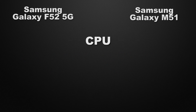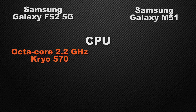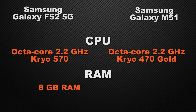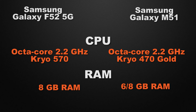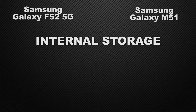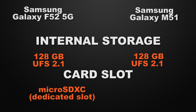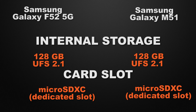Both devices can clock at 2.2 GHz on an octa-core Kryo chipset, so it's a tie. The F52 has only an 8GB RAM variant, whereas the M51 has two variants — 6GB and 8GB — so the winner is M51 for having multiple RAM options. Both devices come with 128GB internal storage and a dedicated microSD card slot, so it's a tie on both counts.